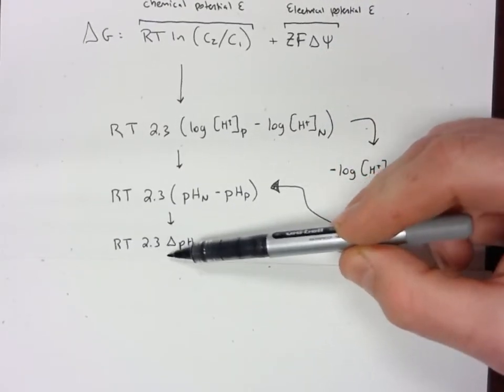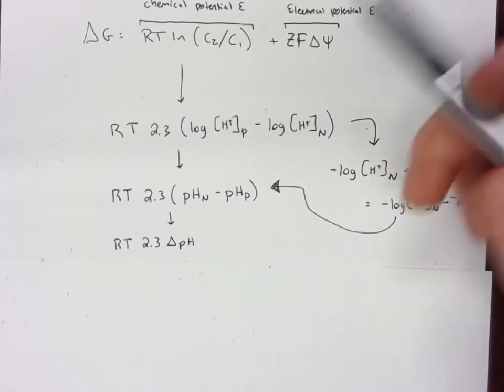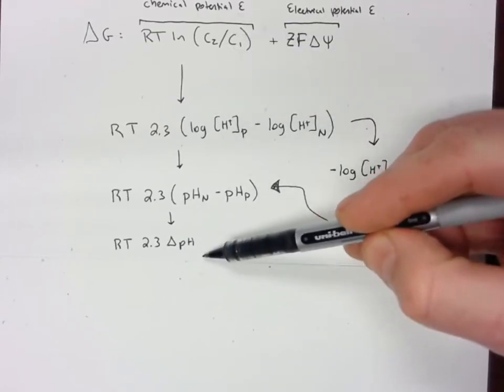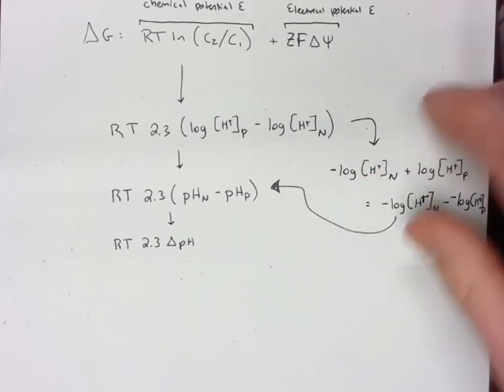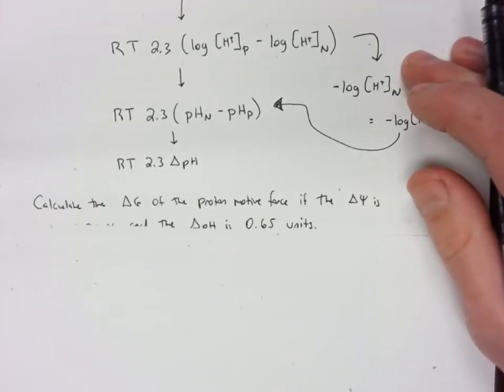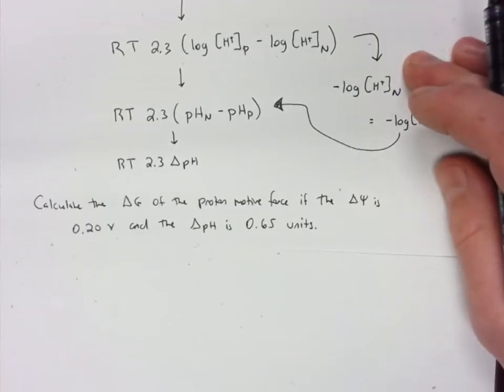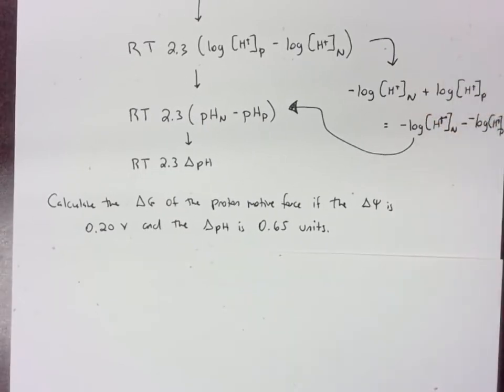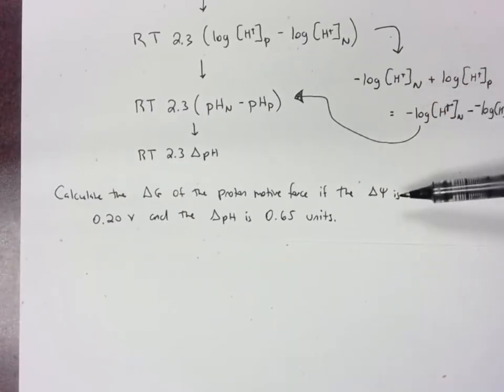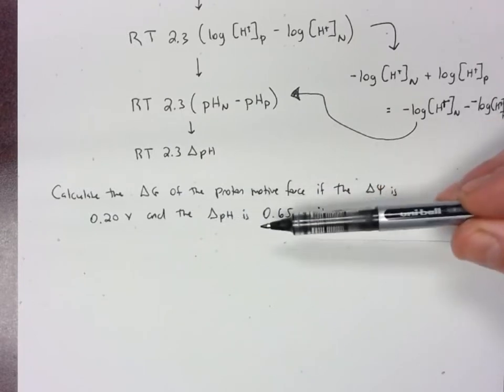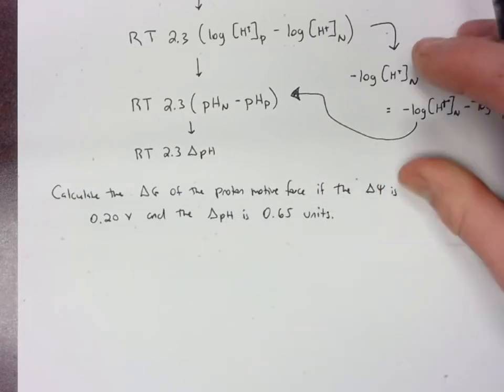So I have a problem here. Calculate the ΔG of the proton motive force if the ΔΨ is 0.2 volts and the ΔpH is 0.65 units. So I'm just going to plug those numbers in.